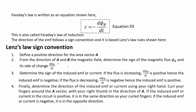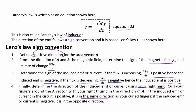Faraday's law is written as equation 3, also called Faraday's law of induction. The direction of the EMF follows a sign convention based on these rules. First, define a positive direction for the area vector A. Second, from the directions of A and B determine the sign of the magnetic flux and its rate of change. Third, determine the sign of the induced EMF or current — if the flux is increasing the rate is positive and the induced EMF is negative; if decreasing, the rate is negative and the induced EMF is positive. Finally, use the right hand rule: curl your fingers around A with your thumb in the direction of A; if the EMF is positive it follows your curled fingers, if negative it is in the opposite direction.